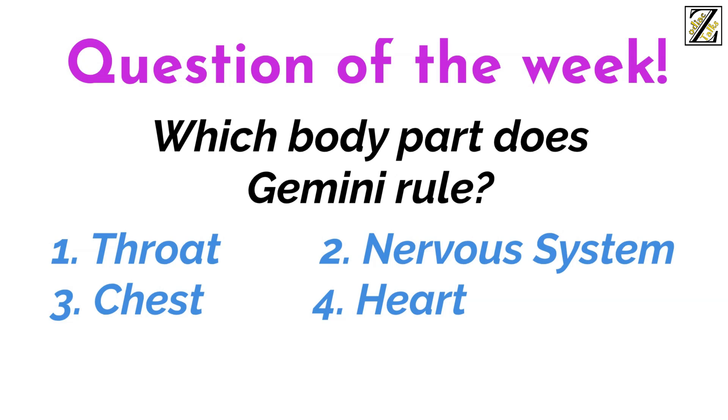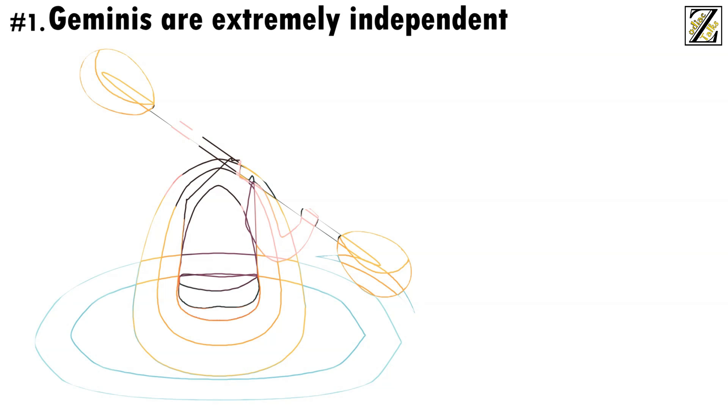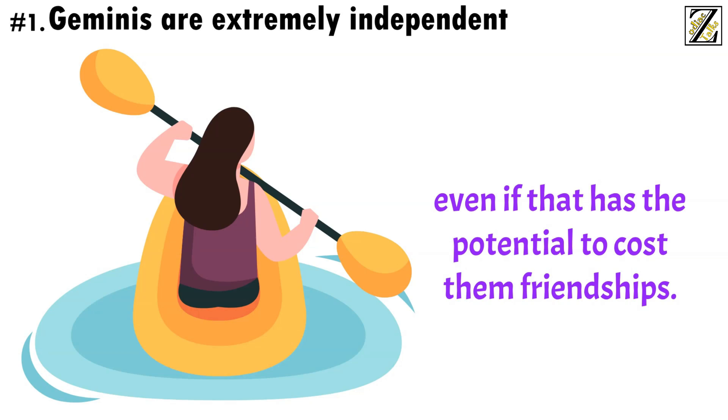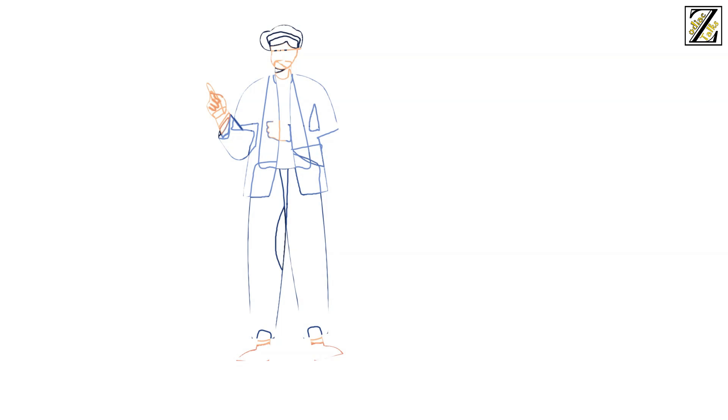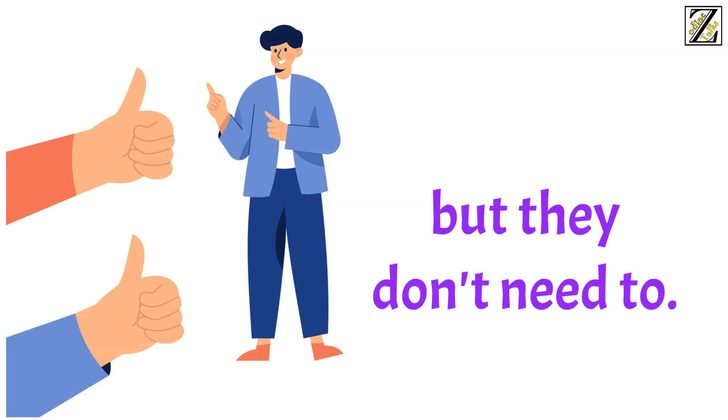Proceeding to Interesting Facts. Number 1, Geminis are extremely independent. Though they're a highly sociable sign, Geminis are very independent and will live their lives to the beat of their own drum, even if that has the potential to cost them friendships. They don't see the point in compromising their individuality just to gain other people's approval. They like hanging out with people, sure, but they don't need to.